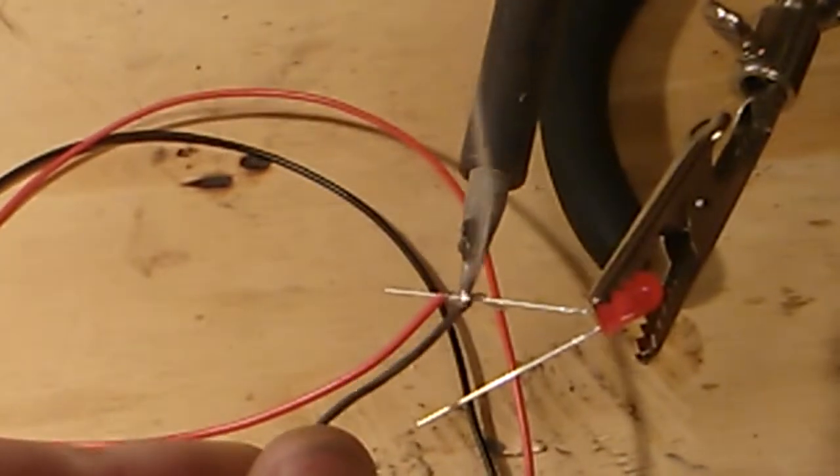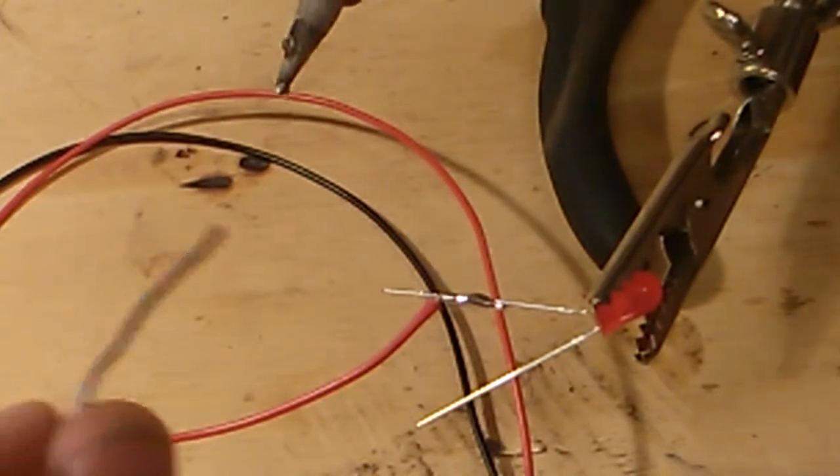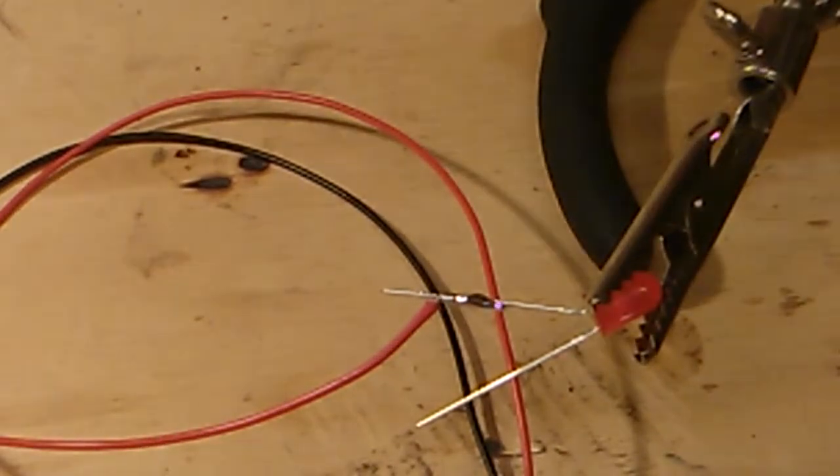So solder, soldering iron, and just feed the two in together like this until you get a nice thin coating. Alright, that should now be stuck.